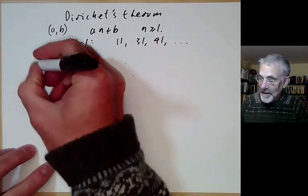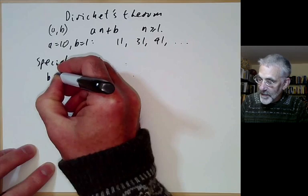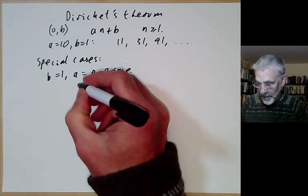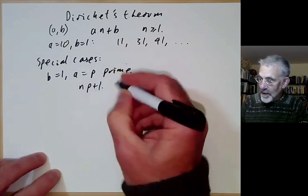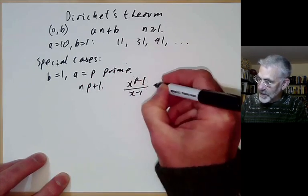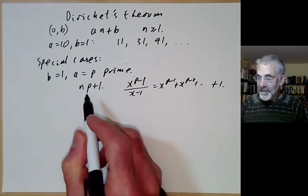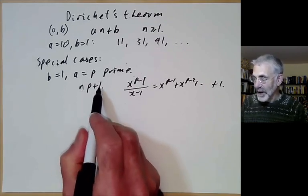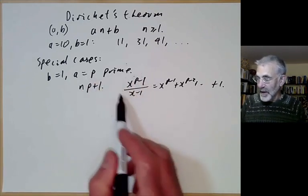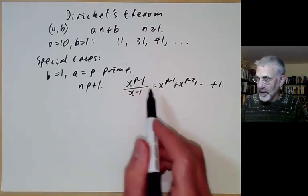We've proved this in various special cases before. In the case b equals 1 and a equals p, a prime, we showed there were infinitely many numbers of the form np plus 1 by considering the polynomial x to the p minus 1 over x minus 1, which is x to the p minus 1 plus x to the p minus 2 and so on plus 1. There's a variation where you can show there are infinitely many primes of the form 1 modulo a, even when a is not prime, by using a cyclotomic polynomial, whose roots are primitive a-th roots of unity.